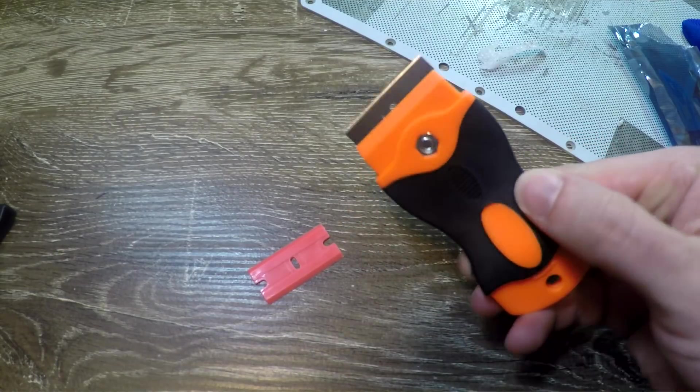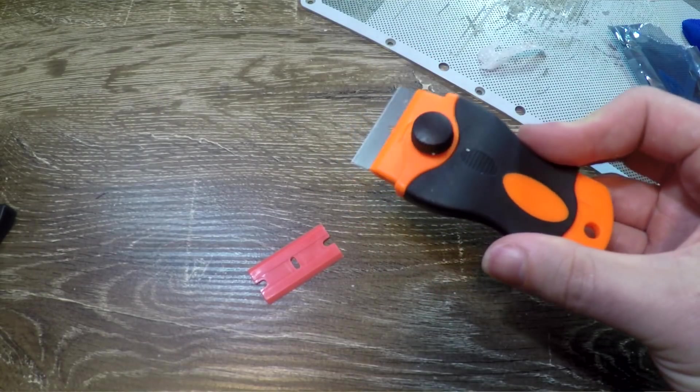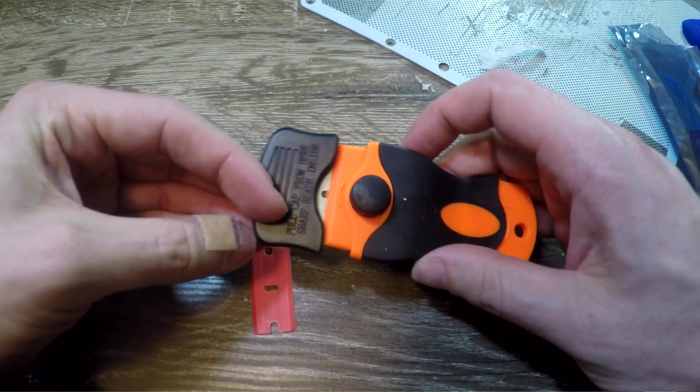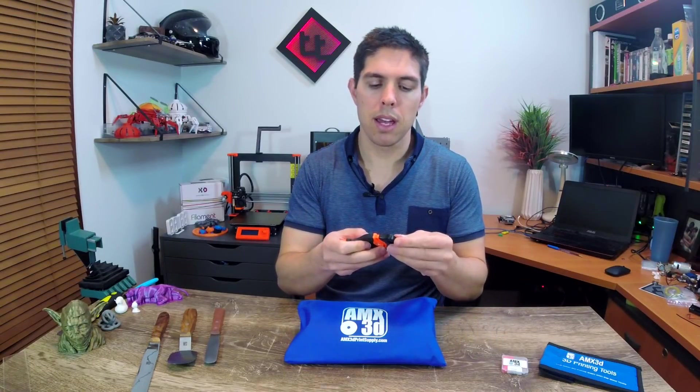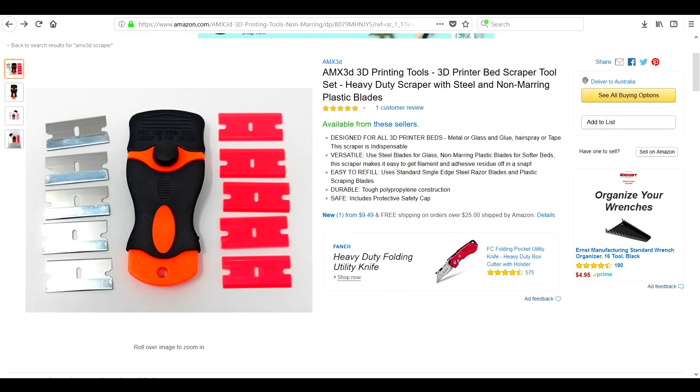We're going to start with the simplest, which is the scraper kit. It's got a really ergonomic handle and a nice safety cover. You can take it off and then you can untwist this dial to remove and change the blades over. The blades that it comes with are mixed between plastic and metal and they're designed for one purpose and one purpose alone, and that is cleaning the bed of your 3D printer.